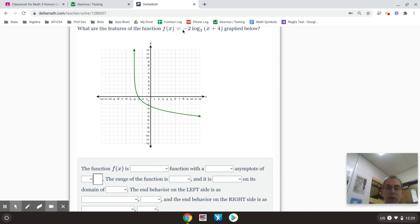So, it says what features of the function are graphed below? First thing is it wants to know if it's exponential or log. Clearly it has the word log in it, so it's a logarithmic function.